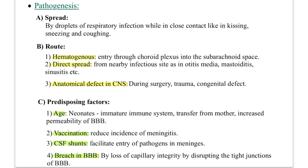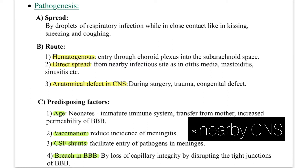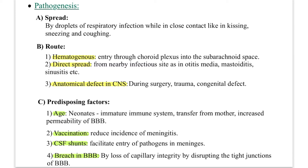Once spread, the routes in the human body are: first, hematogenous spread — by blood, entry through the choroid plexus into the subarachnoid space. The choroid plexus is present in the ventricles of the brain; from there it travels to the subarachnoid space and causes inflammation. Second, direct spread from a nearby infection site like otitis media, mastoiditis, or sinusitis, which are all near the CSF.